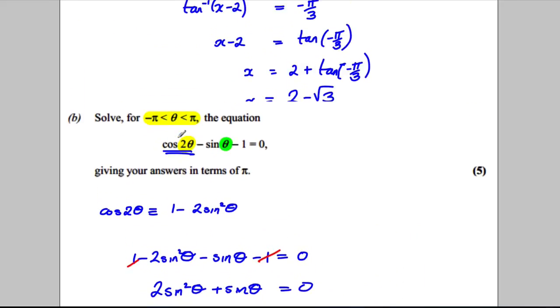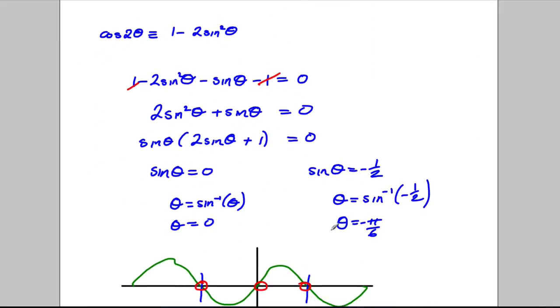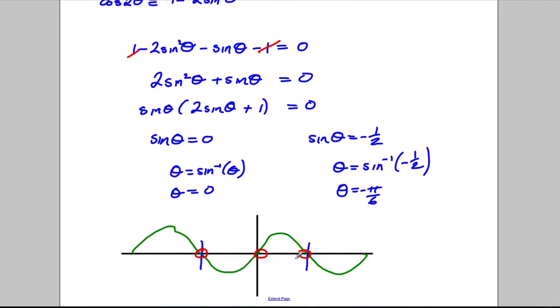However, we're strictly between negative pi and pi. We're not including these. So these two will not include. And it will just be this 0 here.